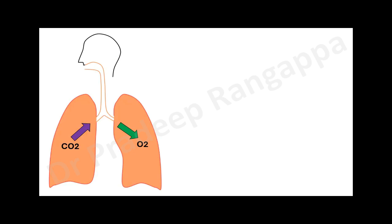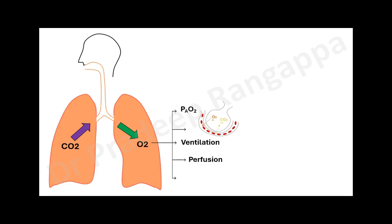There are five determinants of oxygenation in the lungs. First, alveolar oxygen concentration — how much oxygen is going into the alveoli is pertinent for adequate oxygenation. Second is diffusion — diffusion of oxygen and carbon dioxide at the alveolar and capillary membrane. Third is ventilation. Fourth is perfusion. Fifth, and most importantly, ventilation and perfusion, although they happen concurrently, there needs to be a good balance — what we call ventilation-perfusion matching.